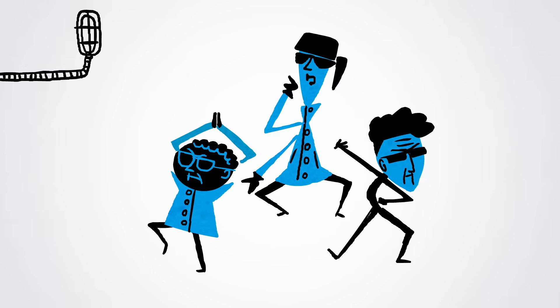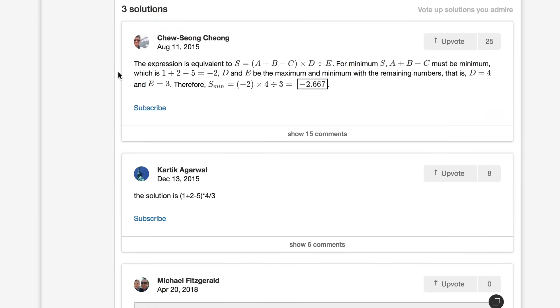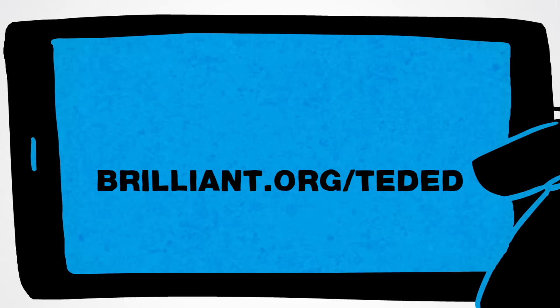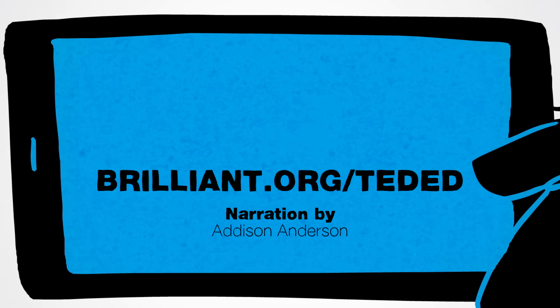This puzzle comes courtesy of our sponsor, Brilliant.org. Brilliant is a great way of honing your problem-solving skills and learning from a community of fellow math enthusiasts. It features a lively discussion where people have explored this problem from a variety of approaches, including how to take it one step further. Join the conversation today at Brilliant.org/TedEd, or click the link below to enter your answer to the bonus riddle. And if you sign up for a premium membership using one of our links, you can get 20% off the annual fee.